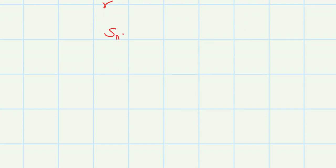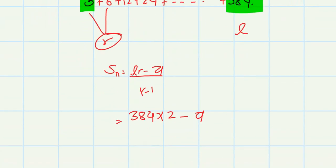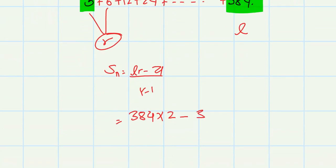S_n is equals to a(r^n - 1) by (r minus 1). R divided by R divided by R divided by 2 minus 1.